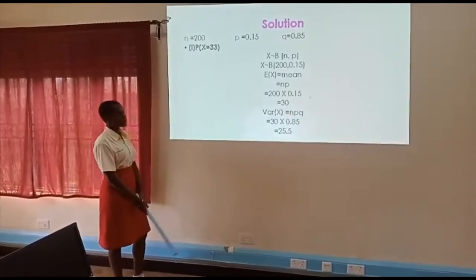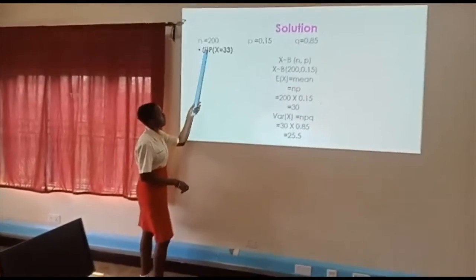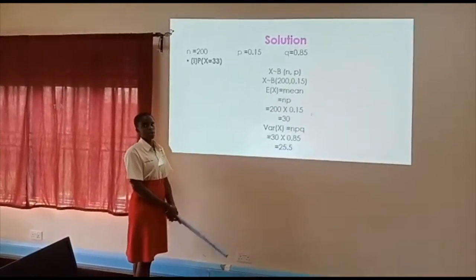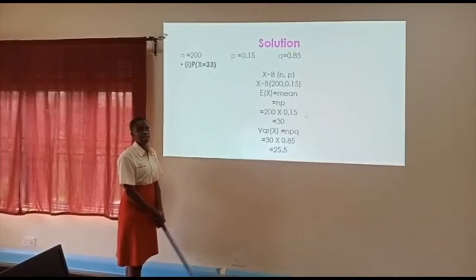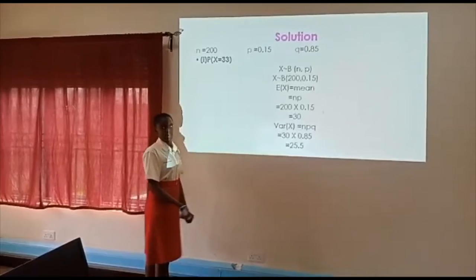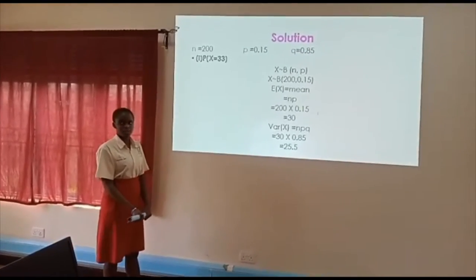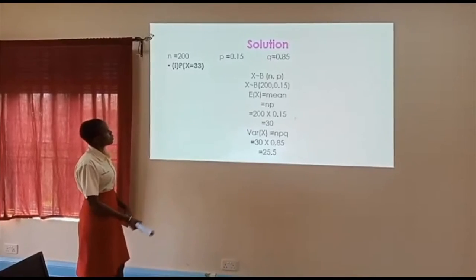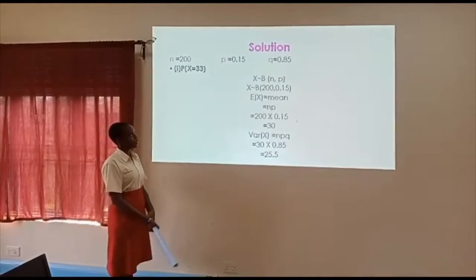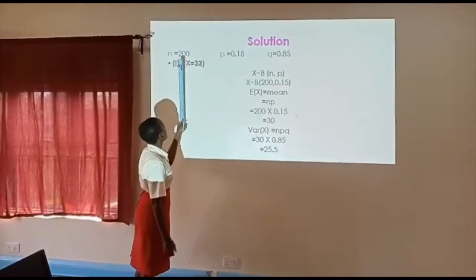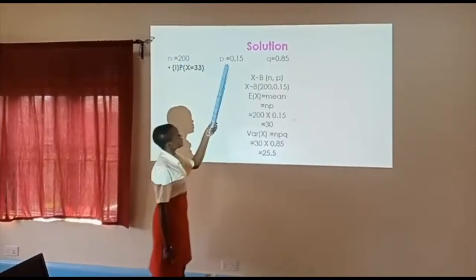They tell us 85% of the nails made are within, so 0.85 is our success for those within the set tolerance limits. But they want us to find exactly 33 that are outside, meaning 1 minus 0.85 equals 0.15 is our success for those outside. So from the question, our n is 200, our p is 0.15, and 0.85 is the failure. We let X follow a binomial distribution of n, p.